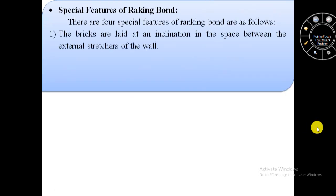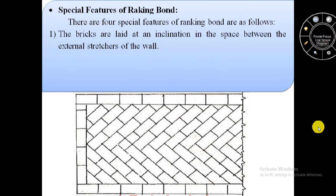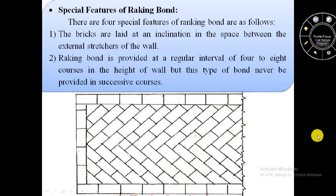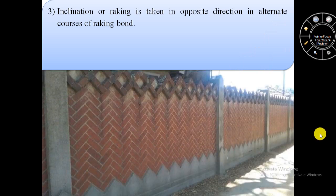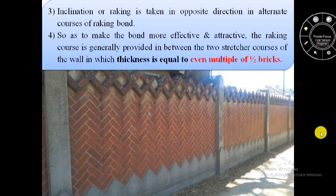Special features of raking bond: first, bricks are laid at an inclination in the space between the external stretchers of the wall; second, raking bond is provided at regular intervals of four to eight courses in height but is never provided in successive courses; third, inclination or raking is taken in opposite direction in alternate courses; fourth, the raking course is generally provided between two stretcher courses of the wall where thickness is equal to an even multiple of half brick.